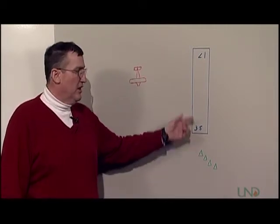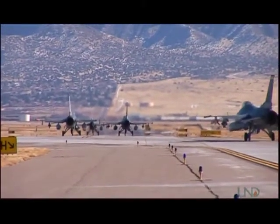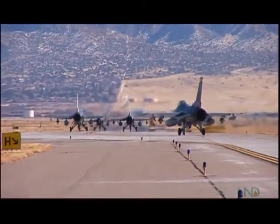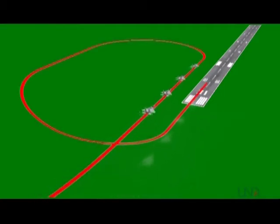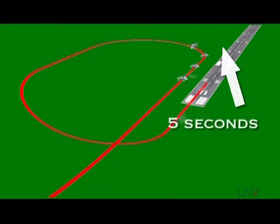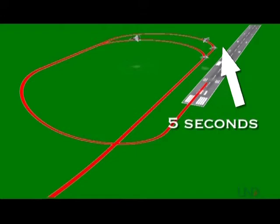On a 12,000-foot runway, all four airplanes may well be on the runway at the same time. They need about 3,000 feet of spacing between aircraft at touchdown, then as they roll out they can compress. So number one pitches out and makes a hard left turn for a left-hand pattern. Numbers 3 and 4 continue straight up the runway. When number 2 sees the lead go into the break, he counts to 5 seconds, then goes into his break. Number 3 breaks 5 seconds after that, and number 4 breaks 5 seconds after number 3.